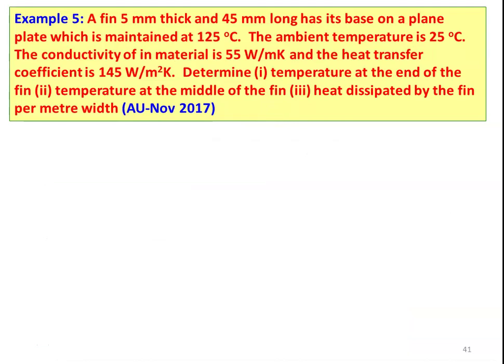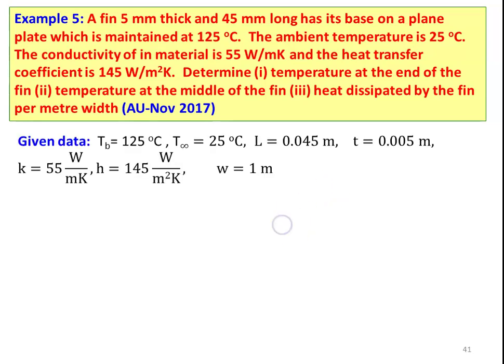Example number 5: A fin 5 millimeter thick and 45 millimeter long has its base on a plane plate maintained at 125 degree Celsius. The ambient temperature is 25 degree Celsius. Conductivity of the material is 55 watts per meter Kelvin and heat transfer coefficient is 145 watts per meter square Kelvin. Determine: (1) temperature at the end of the fin, (2) temperature at the middle of the fin, and (3) heat dissipated by the fin per meter width. Given: base temperature 125°C, ambient temperature 25°C, length 0.045 m, thickness 0.005 m, k = 55 W/mK, h = 145 W/m²K, width = 1 m.